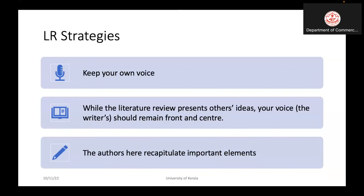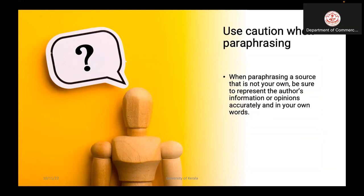Authors should recapitulate important elements. A literature review is essentially a paraphrasing method — we have to paraphrase the findings of authors related to our topic. When paraphrasing a source that is not your own, be sure to represent the author's information or opinions accurately in your own words, without losing the genuineness of the information.